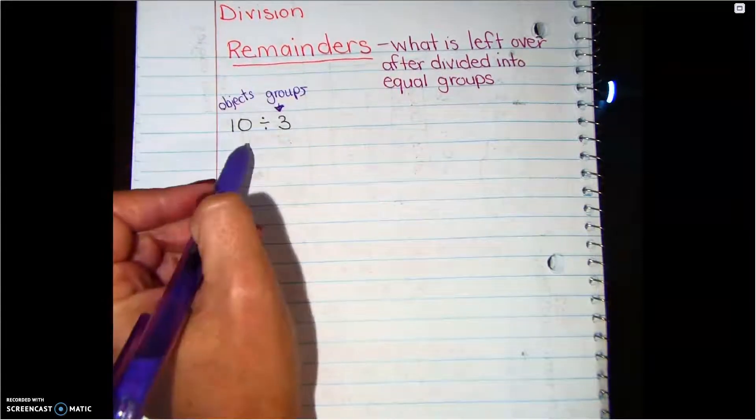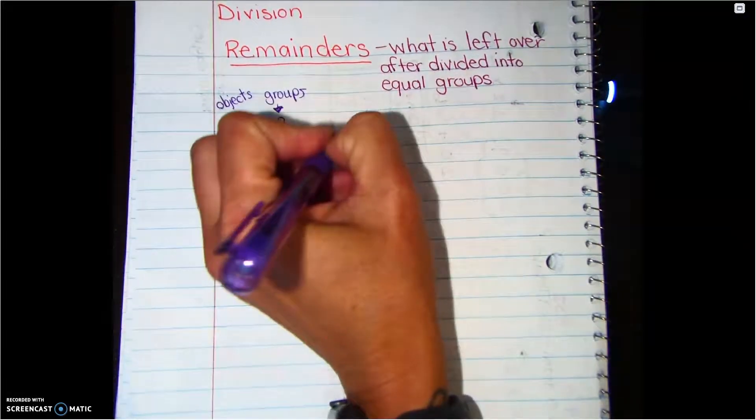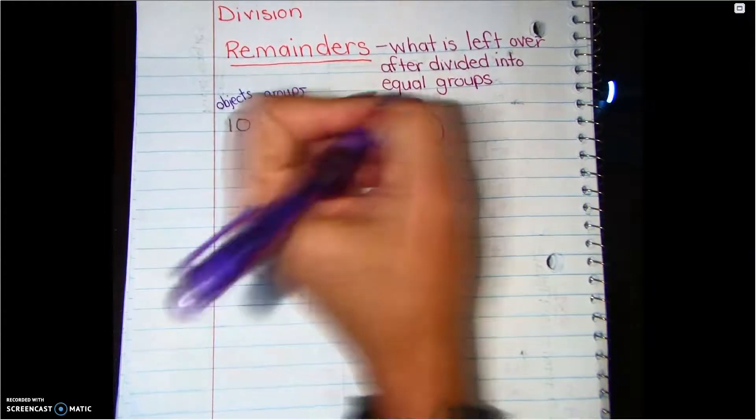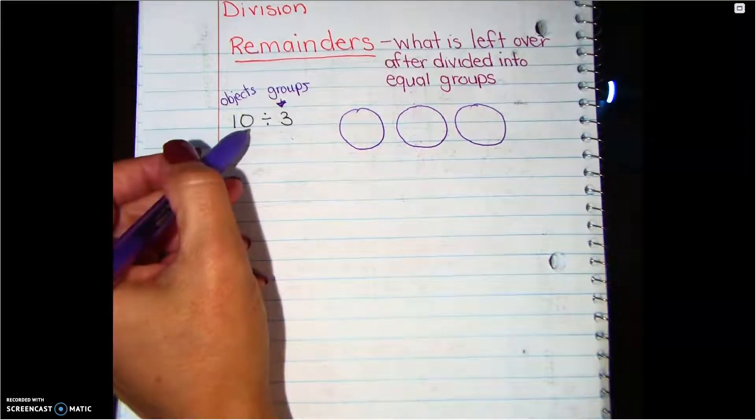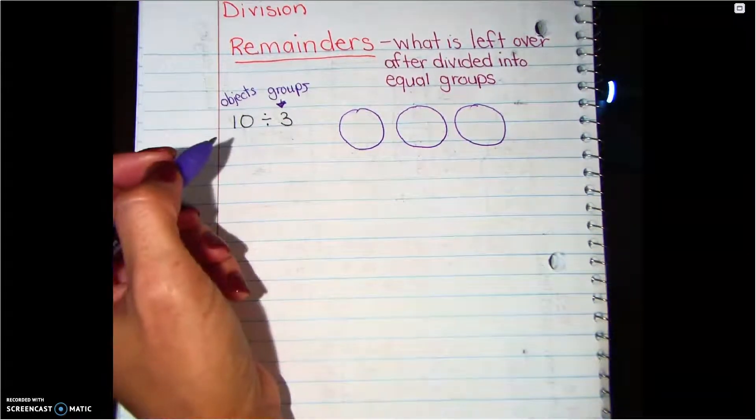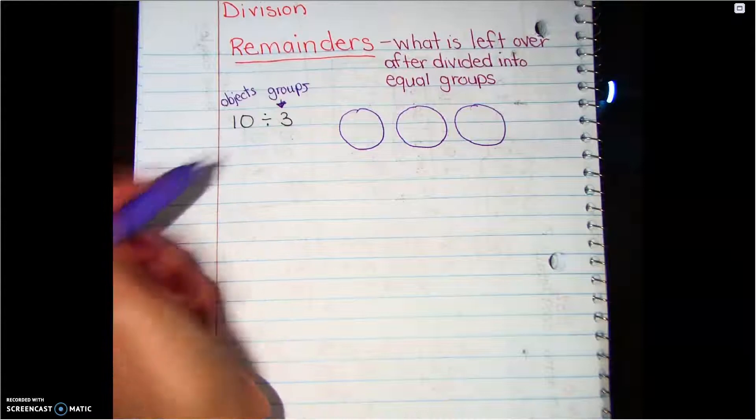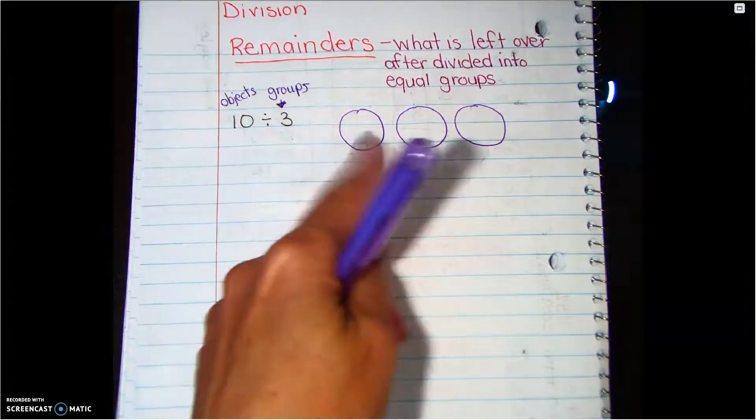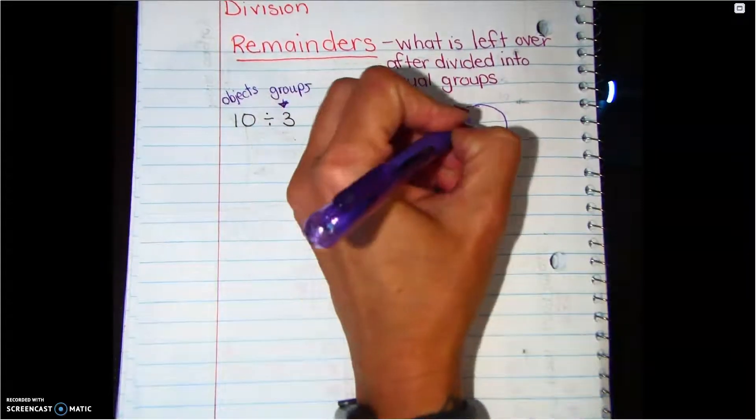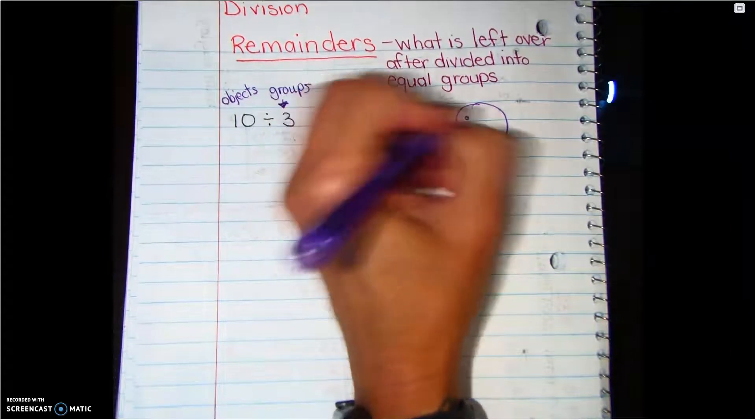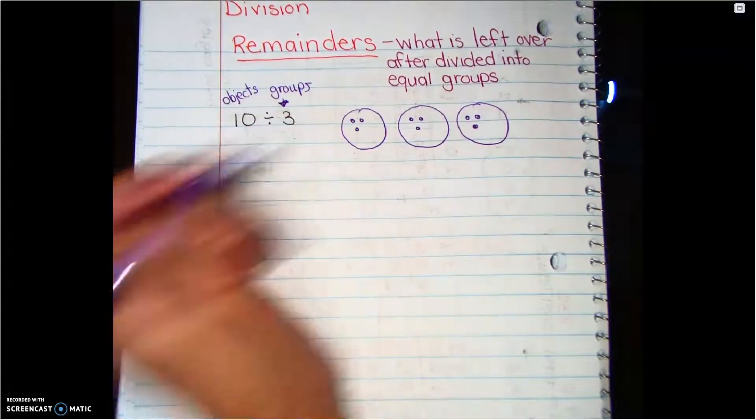So we want to put 10 objects into three groups. The first thing that we're going to do is draw our groups: one, two, three. The next thing we're going to do is start doing fair share of 10. Now the easiest way to do fair share is just to count as you are marking through each one. Fair share. So I'm thinking like if I'm giving cookies to my friends and I have 10 cookies and three friends.